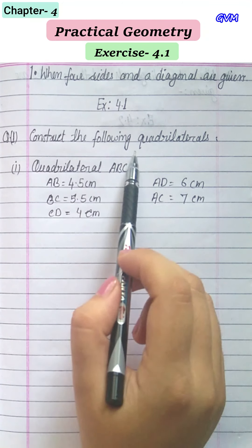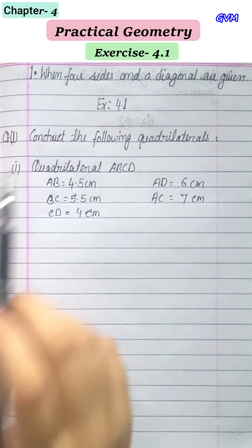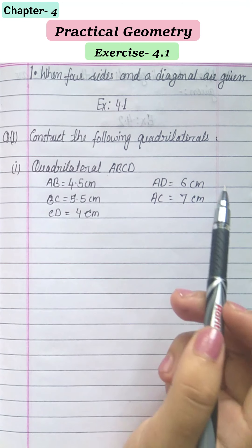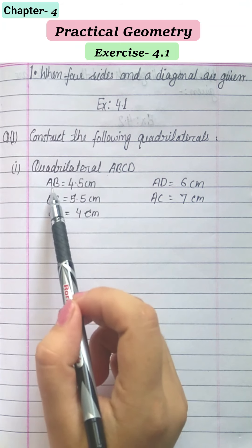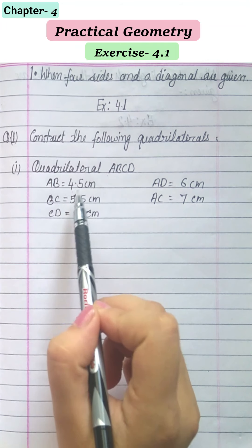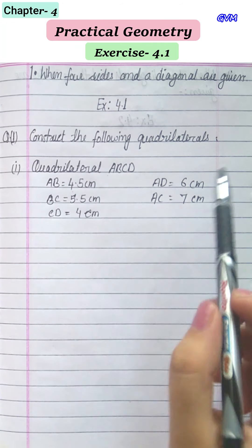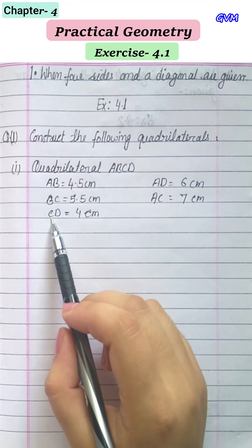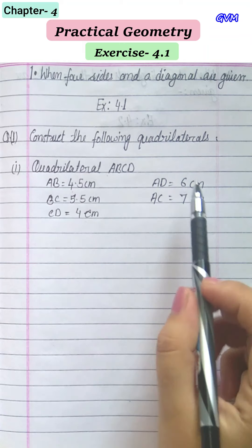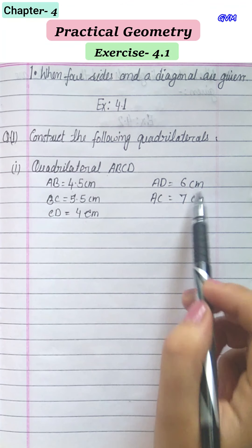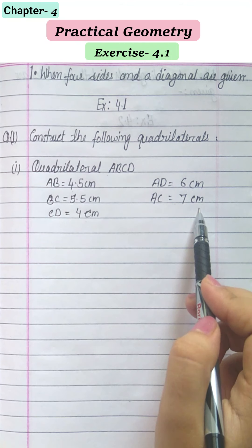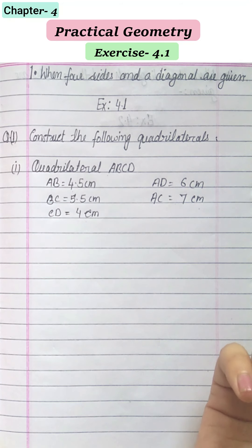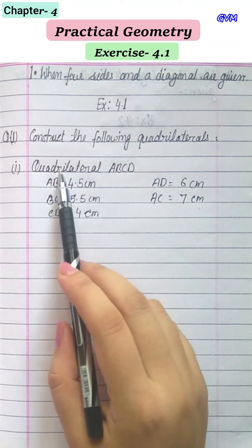The first question is: construct the following quadrilateral named ABCD. In this quadrilateral, AB = 4.5 cm, BC = 5.5 cm, CD = 4 cm, AD = 6 cm, and AC = 7 cm. Now, how do we know which side is which?